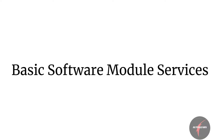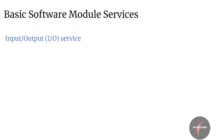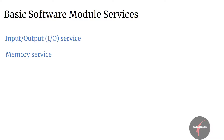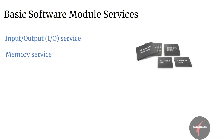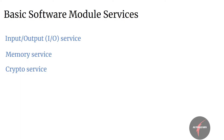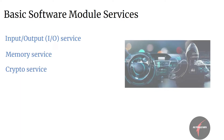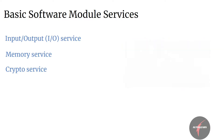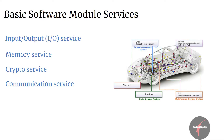Let's now look into the types of services provided by basic software modules. First, input-output services: the basic software module provides standardized access to sensors, actuators, and ECU onboard peripherals. Next, memory services: standardized access to internal or external non-volatile memory. Crypto services: standardized access to cryptographic primitives, including internal or external hardware accelerators. Communication services: the basic software module provides standardized access to vehicle network systems, ECU onboard communication systems, and ECU internal software.